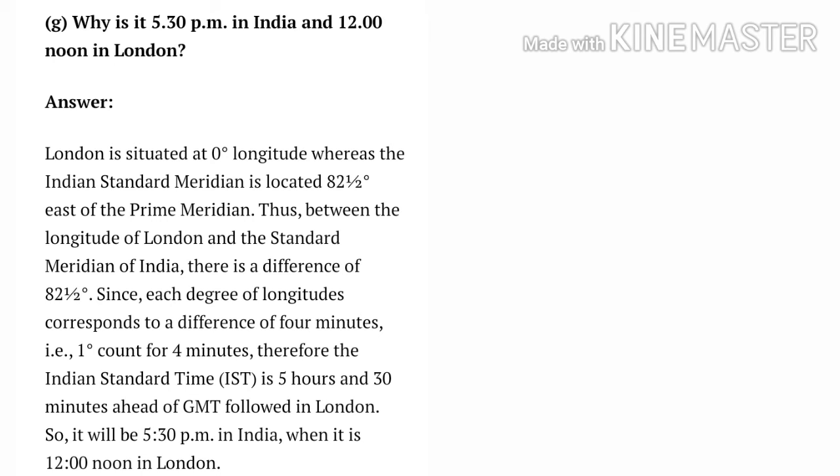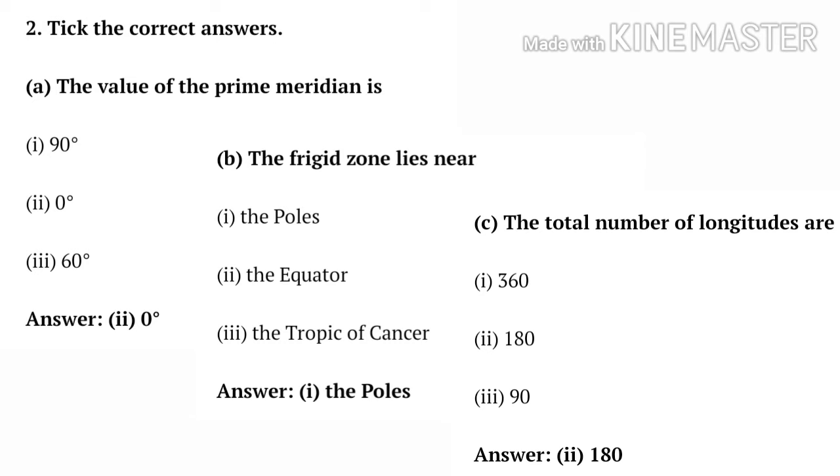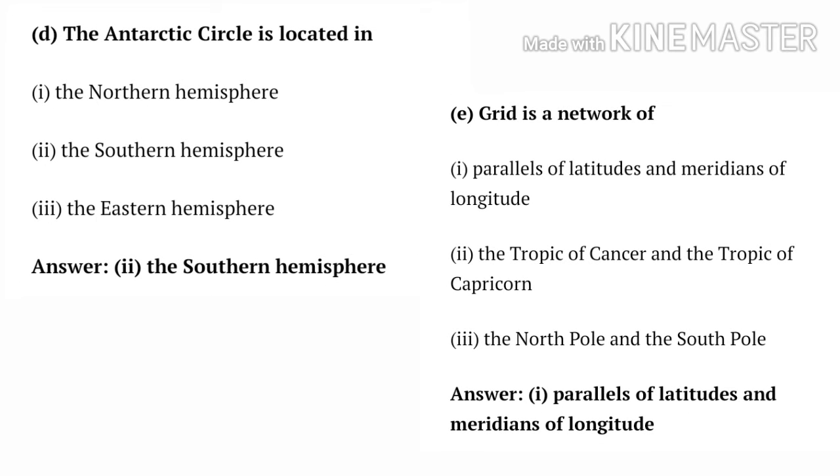Tick the correct answer: A. The value of the Prime Meridian is zero degrees. B. The frigid zone lies near the poles. C. The total number of longitudes are 180 degrees. D. The Antarctic Circle is located in the southern hemisphere. E. Grid is a network of parallels of latitude and meridians of longitude.